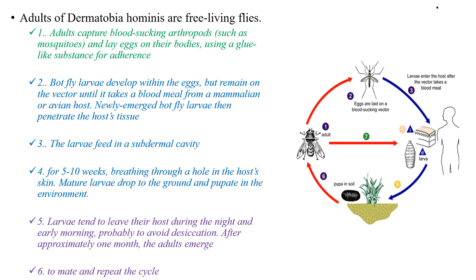When we see the life cycle of the most common fly that causes myiasis in humans, Dermatobia hominis, these are free-living flies. The adult captures blood-sucking vectors such as mosquitoes and lays eggs on their bodies using a glue-like substance for adherence. Then bot fly larvae develop within the eggs but remain on the vector until it takes a blood meal from a mammalian host. Newly-emerged bot fly larvae then penetrate the host tissue and feed in a subdermal cavity. After a few weeks, breathing through a hole in the host skin, mature larvae drop to the ground and pupate in the environment. Larvae tend to leave their host during the night and early morning, probably to avoid desiccation. After approximately one month, the adults emerge, and they mate and repeat the cycle.